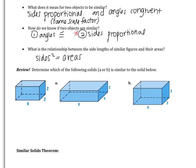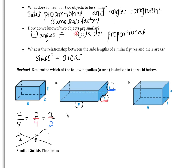First, determine whether the following solids are similar. I have a solid on the left with sides of 4, 2, and 2, and I want to know if solid A is similar. Solid A has sides of 8, 4, and 2. Setting up proportions: 4 over 8 is 1/2, 2 over 4 is 1/2, and 2 over 2 is 1. These are not the same, so our solid is not similar to A.